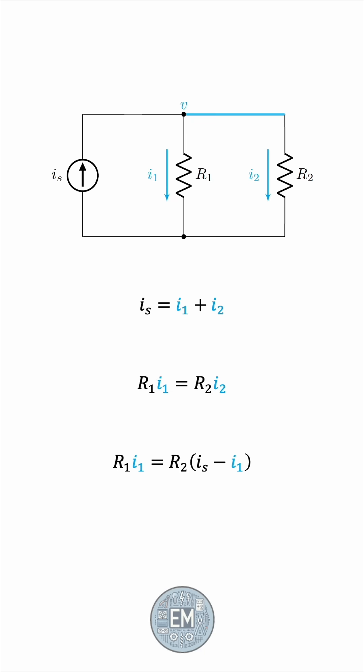We'll now expand the brackets, take R2I1 to the left, factor out an I1, and divide both sides by R1 plus R2. This is I1,